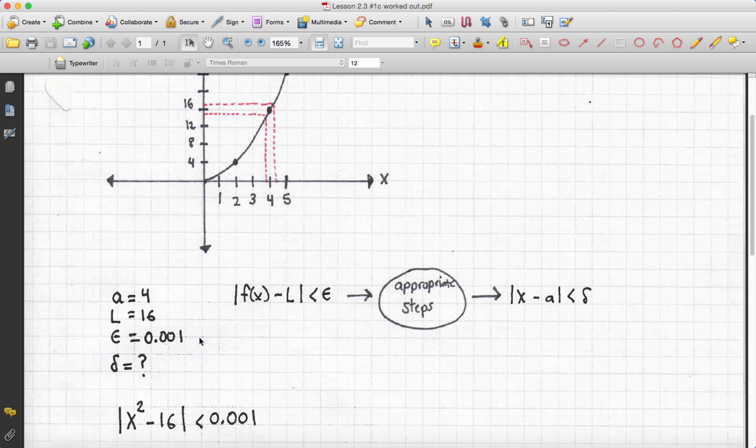We have to be given these three things. Question, can we find delta that makes this all work, that makes the definition work? Again, how does this process work?